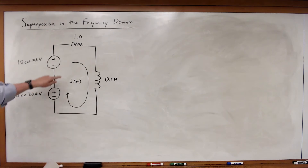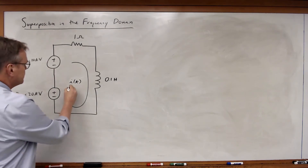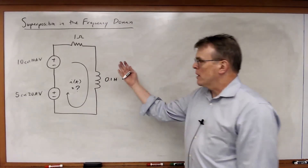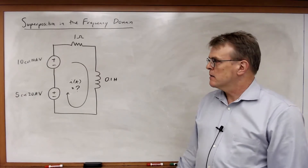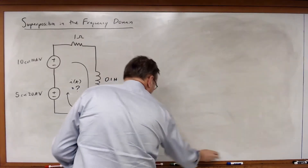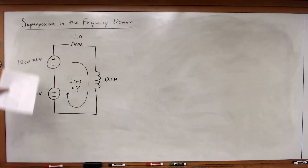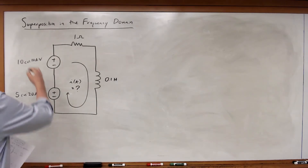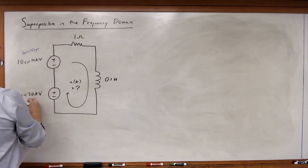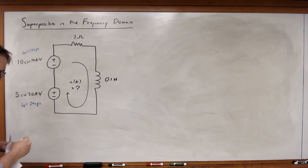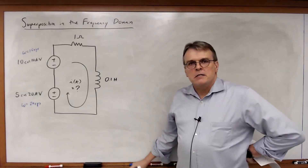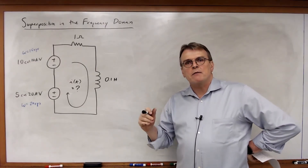What if we had the following problem? We would like to find the value of i(t). At first glance you might say, we'll just do this with phasor analysis. There's only one problem — we can't solve it that way because we have two sources with two different values of omega. We have omega equal to 10 radians per second for the top source and omega equal to 20 radians per second for the bottom source. One of the fundamental requirements of phasor analysis is that all sources must have the same value of omega.